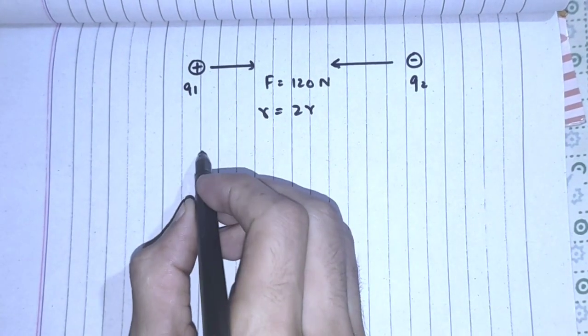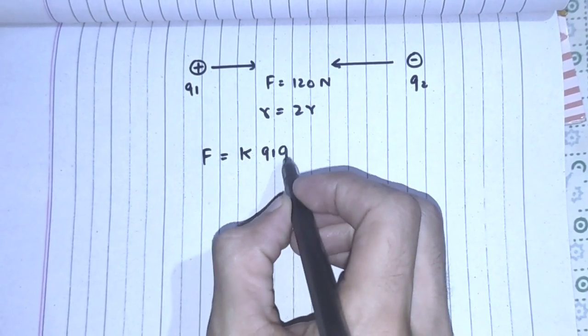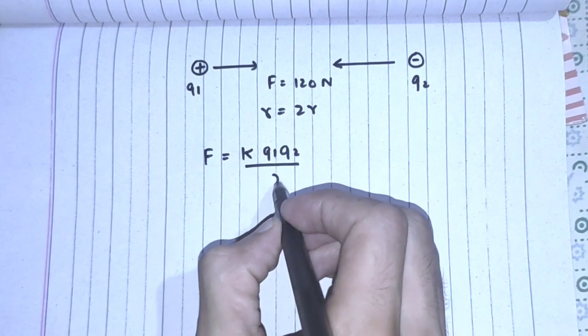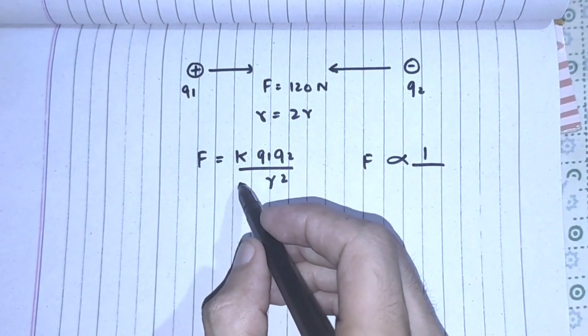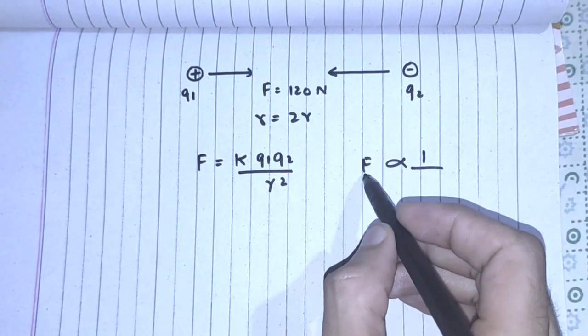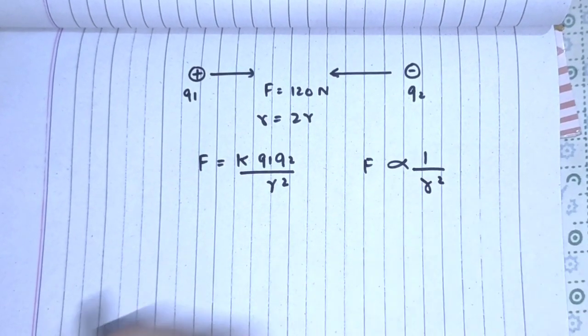We know that the electrostatic force is given by F equals k q1 q2 divided by r square. From this relation we can conclude that force is inversely related to the square of radius between these two charges.